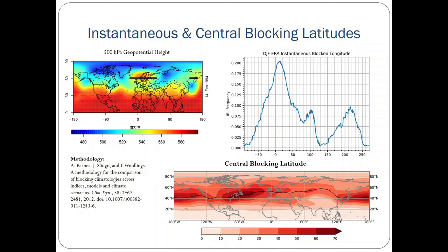Here we're showing both instantaneous and central blocking latitudes. The upper left-hand figure shows that blocking was identified and where it occurred, giving a spatial representation, as well as the frequency of instantaneously blocked longitudes across the x-axis and frequencies across the y-axis, and a sense of the central blocking latitude. All of these are computed using the methodology from Barnes, Slingo, and Woollings, and are now available in METPLUS.